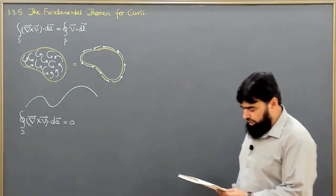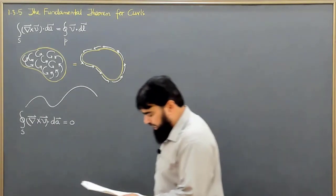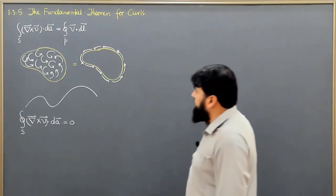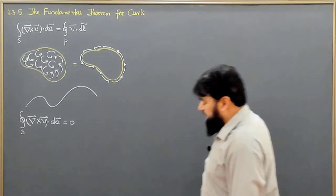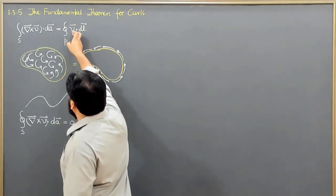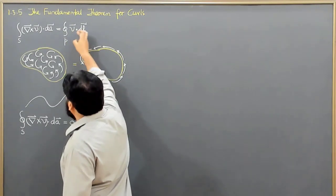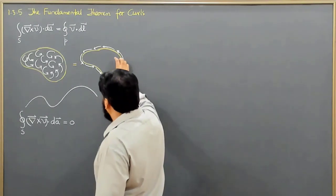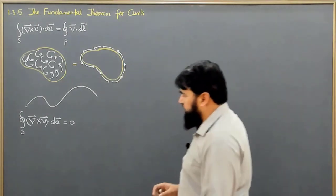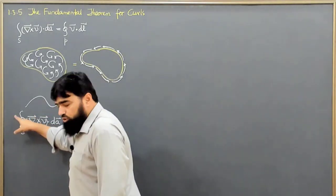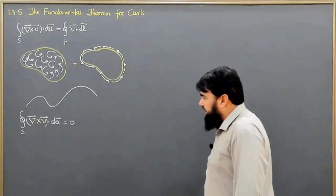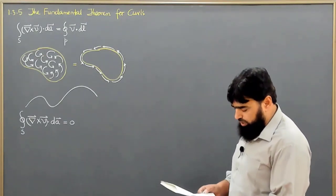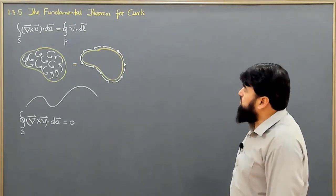So for any closed surface, since the boundary line — like the mouth of a balloon — shrinks down to a point, the right side of the equation vanishes. We are shrinking the line integral to 0, and similarly if we are considering a closed path, then the flux of the curl on that closed surface will also be equal to 0.